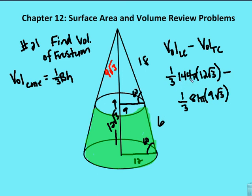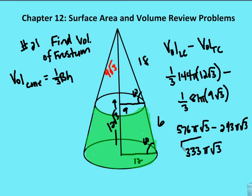Okay, so I have one-third of 144 pi, times 12 root 3, minus one-third, 81 pi, 9 root 3. And if I do the calculations, I will come up with 576 pi root 3 for the larger cone. And then I'm going to subtract 243 pi root 3 for the top cone. And I end up with 333 pi root 3 as my answer for the volume of the frustum.